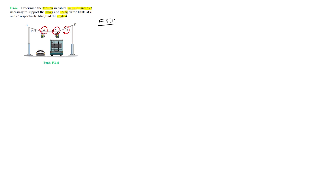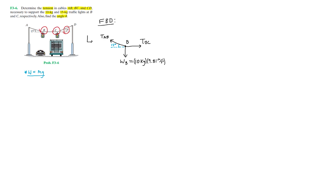To find the tensile forces on these cables, we start by sketching a free body diagram of the system showing all acting forces. Since we have two points of interest, I'll split the system and start with point B. At point B, we have the tension force of cable BC, TBC, which acts along the horizontal, and the tension force of cable AB, TAB, which acts at a 15 degree angle from the horizontal. We also have the weight of traffic light B, WB, equal to 10 kilograms times 9.81 meters per second squared, using a standard x-y coordinate system.